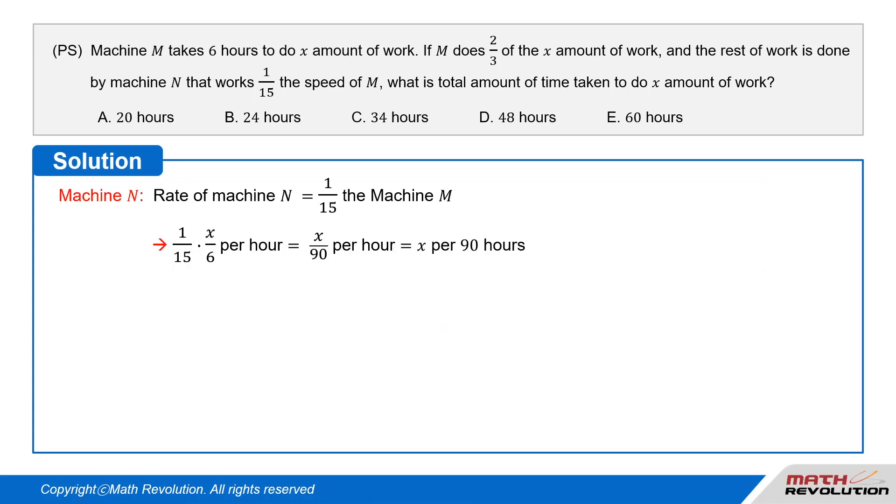Machine N: The rate of Machine N is 1/15 of that of Machine M. So, 1/15 × X/6 per hour = X/90 per hour, which equals X per 90 hours. But only the remaining 1 - 2/3 = 1/3 of work is done by Machine N.